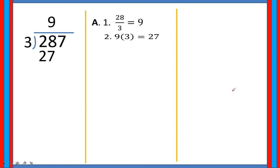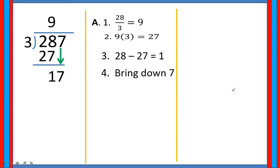Then let's subtract 28 and 27. So, 28 minus 27, that is equal to 1. After that, bring down the next number which is 7, and then you arrive at the second dividend. Then you are going to apply the same process just like you have done a while ago.